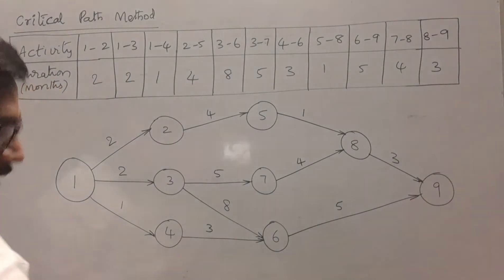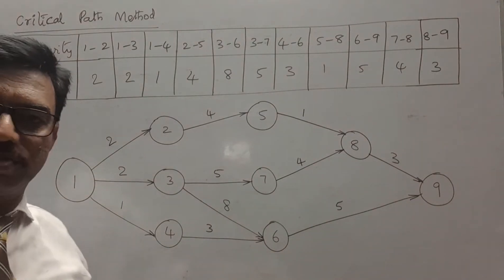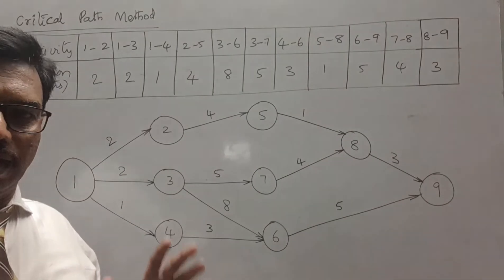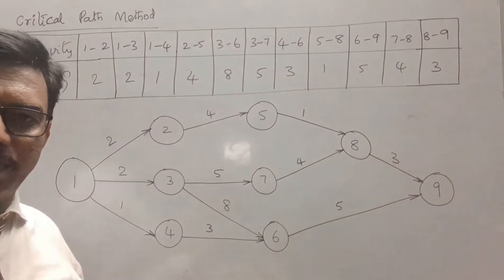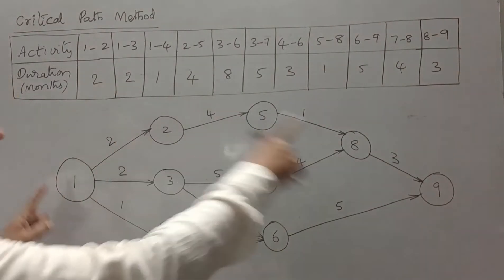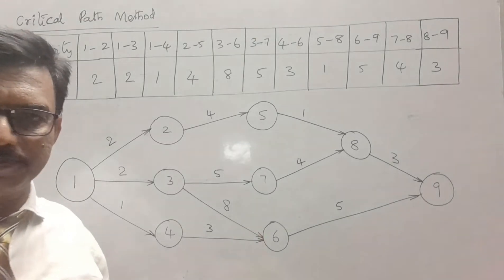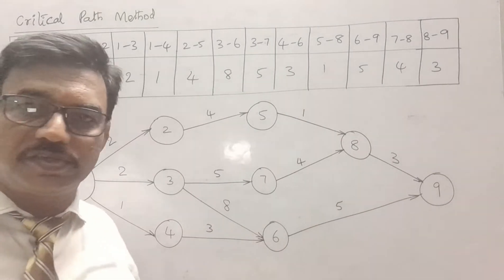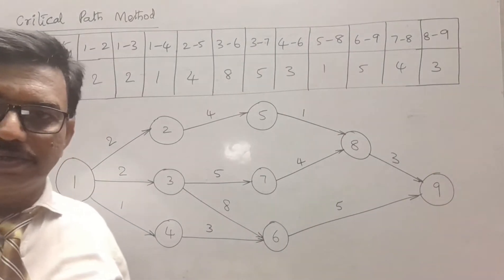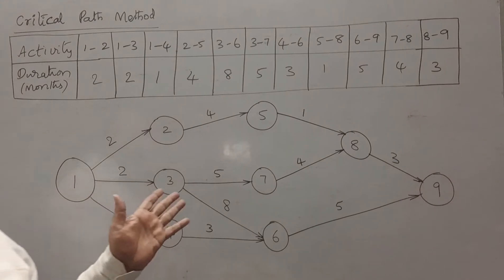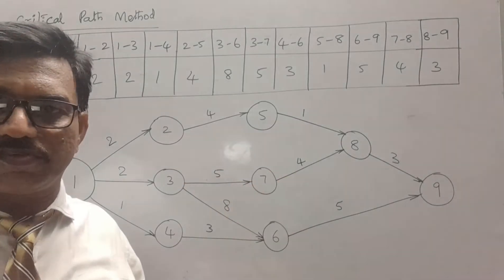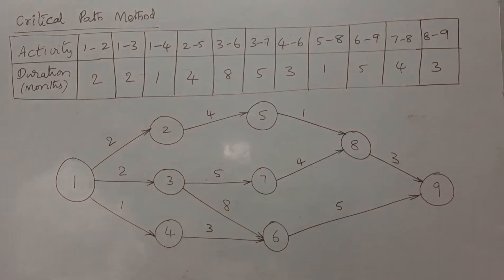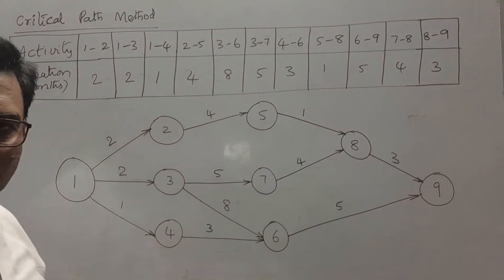This is how we label the activity durations on the arrow marks. One thing to remember is that the shape of the network has no significance, and the lengths of the lines drawn between nodes also have no significance. We are drawing this network simply to represent the precedence relationship among the activities, and also to identify the critical path and project duration.